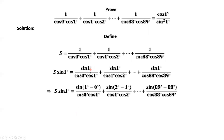We rewrite sine 1° as follows: 1° equals 1° minus 0° for the first term; 1° equals 2° minus 1° for the second term; and for the last term, 1° equals 89° minus 88°.